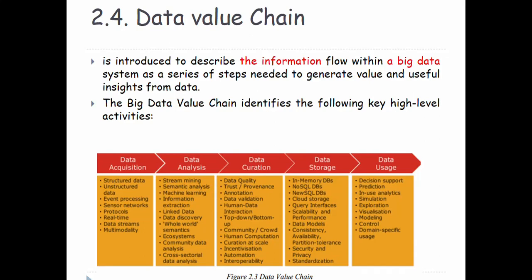The Data Value Chain describes information flow in a big data system. This information flow consists of steps — from data through to information, knowledge, and extract — forming the core of the Data Value Chain.